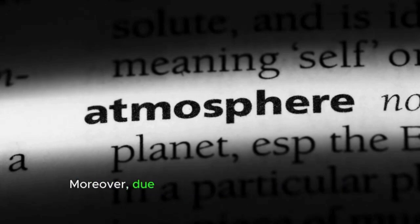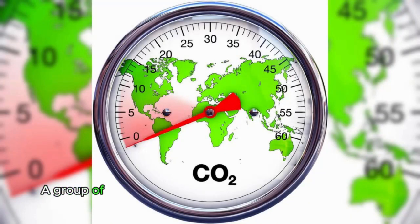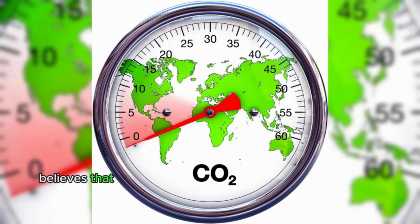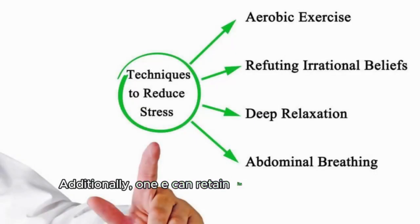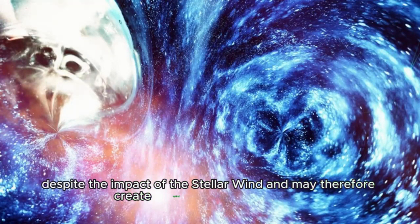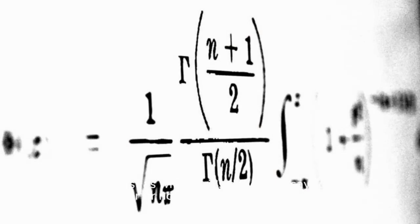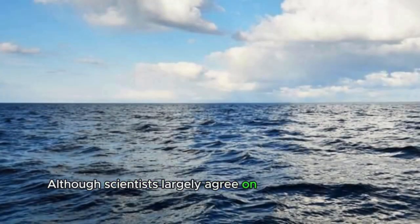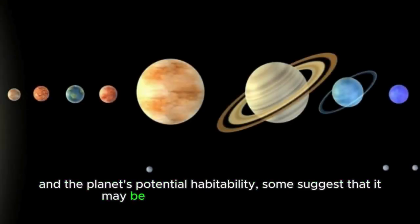Moreover, due to its weight, 1e may have an atmosphere that's not too dense. A group of scientists led by astrophysicist Martin Turbitt believes that the atmosphere on 1e may be rich in CO2 and contain almost no hydrogen, preventing the planet from overheating. Additionally, 1e can retain its atmosphere for an extended time despite the impact of the stellar wind, and may therefore create optimal conditions for life. However, the exact mass of 1e has not yet been established. Therefore, just as with 1d, it's difficult to say for sure whether or not there may be water on it. Although scientists largely agree on the presence of an ocean and the planet's potential habitability, some suggest that it may be a homogeneous rocky planet.